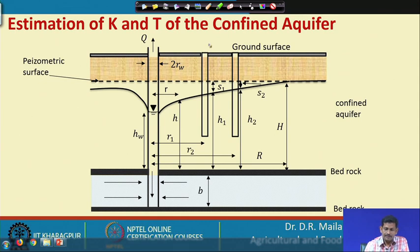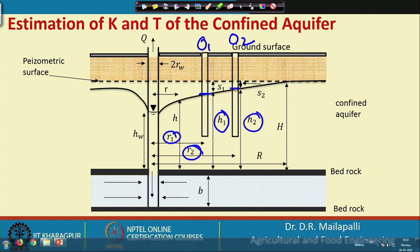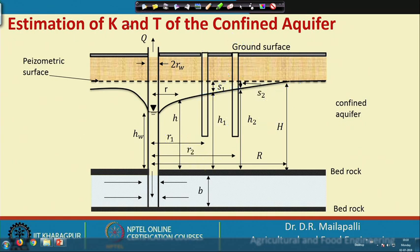Similar to the unconfined aquifer case, we can use this equation to find aquifer properties like k and T. We install one observation well at distance r_1 and a second at distance r_2. After pumping, we observe water levels h_1 and h_2. The drawdown s_1 = H − h_1 and s_2 = H − h_2. From these two drawdown points we derive equations for k and T.